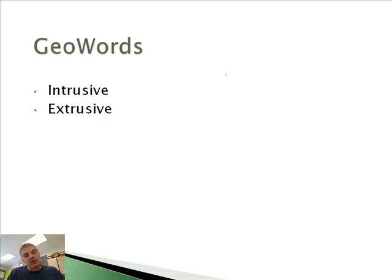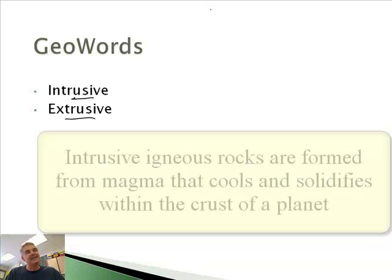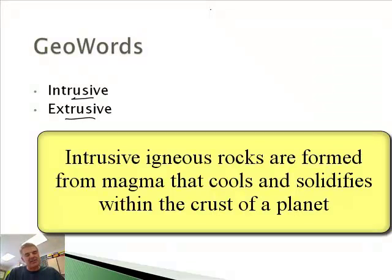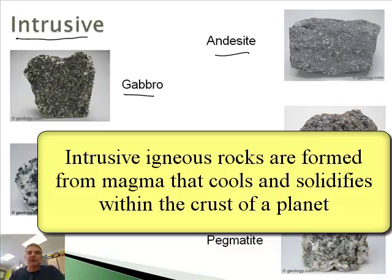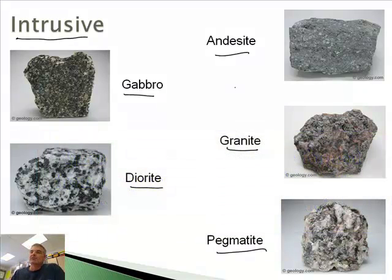First of all, there are two varieties of rocks that come from volcanoes: intrusive and extrusive. It actually makes sense — intrusive means they cool inside, and extrusive means they cool on the outside. Here are some pictures of intrusive igneous rocks. We've got gabbro, diorite, andesite, granite, and pegmatite. These are different varieties of rocks that come out of volcanoes, but they are intrusive, meaning they form inside the earth.